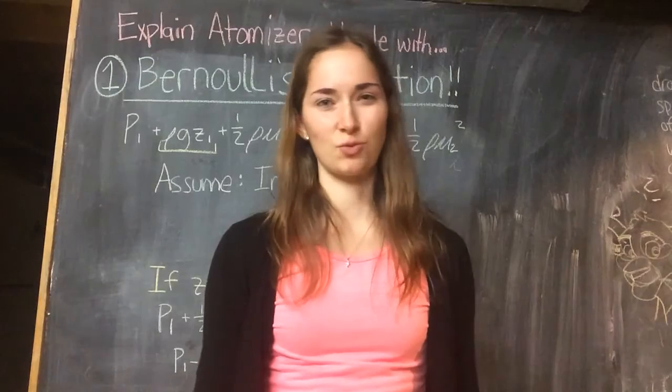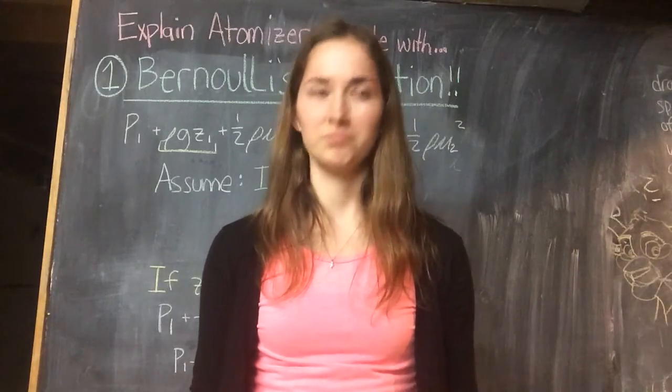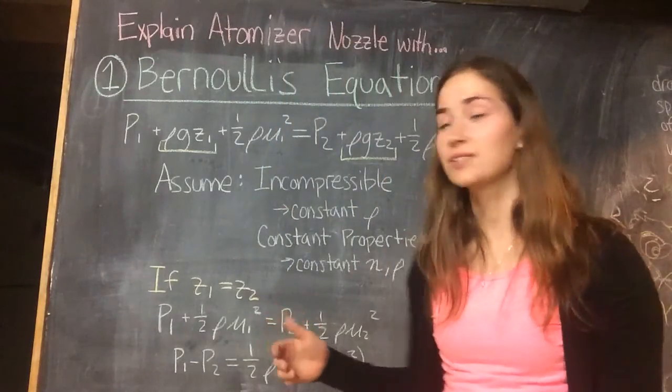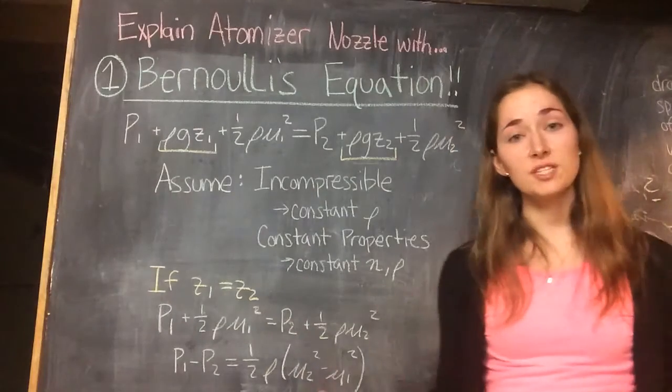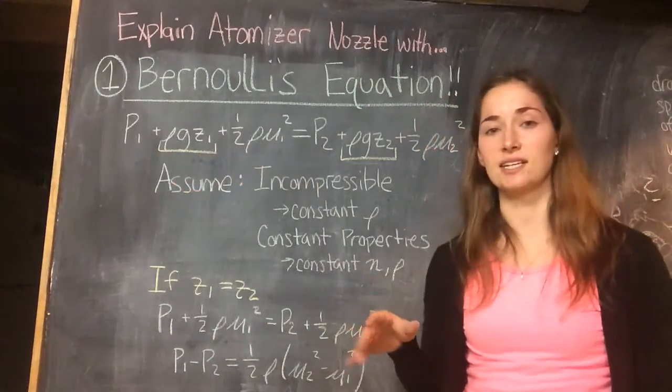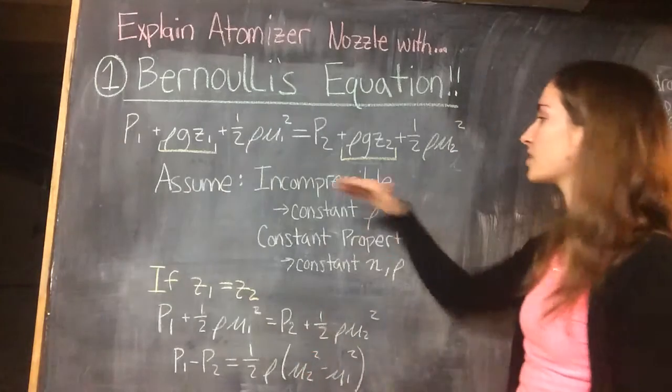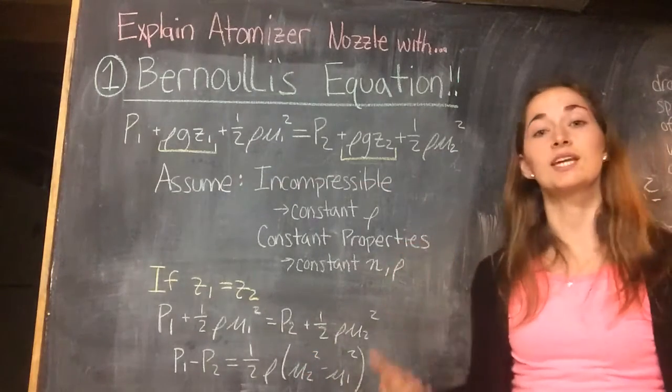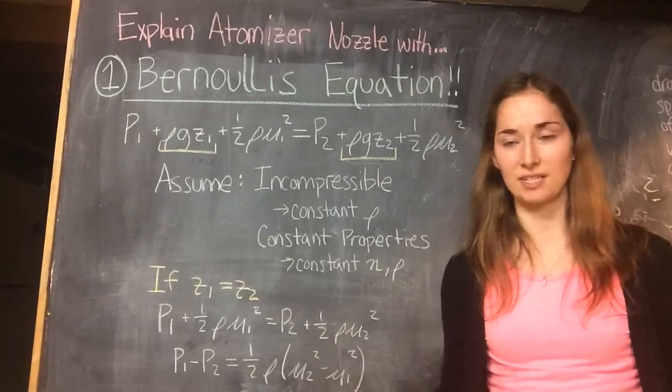How does an atomizer nozzle work? Let's start with Bernoulli's equation. Bernoulli's principle states that a change in pressure, height, and velocity is constant. Therefore, giving us Bernoulli's equation relating pressure, height, and velocity.